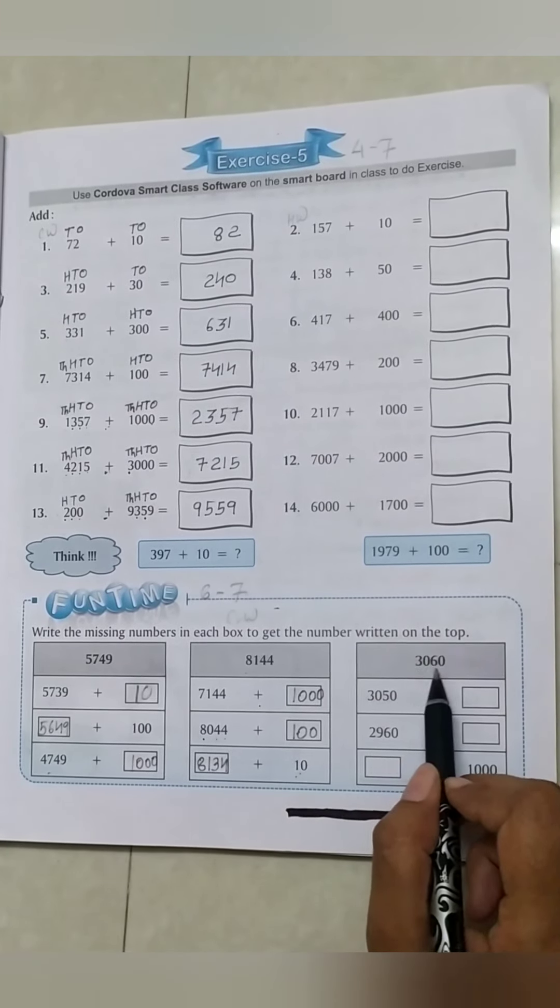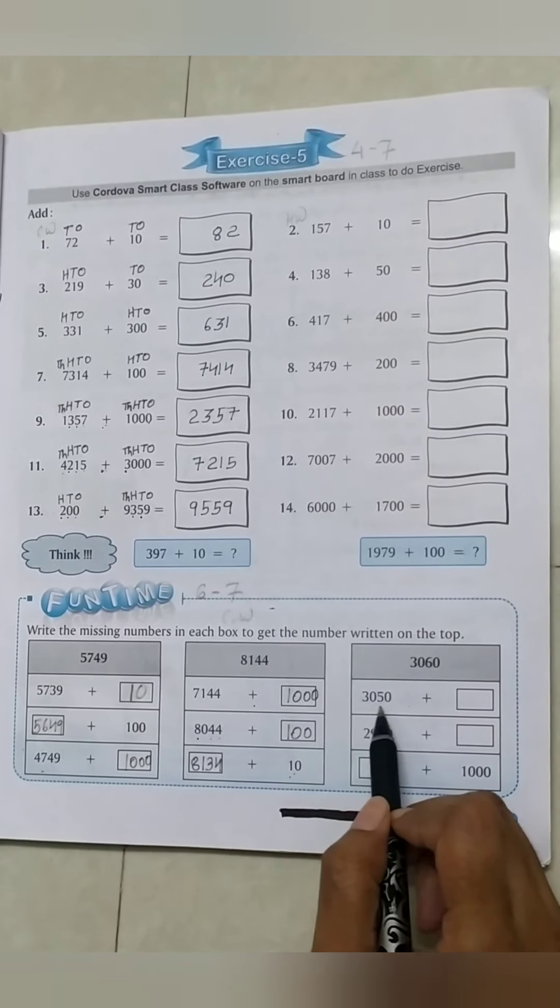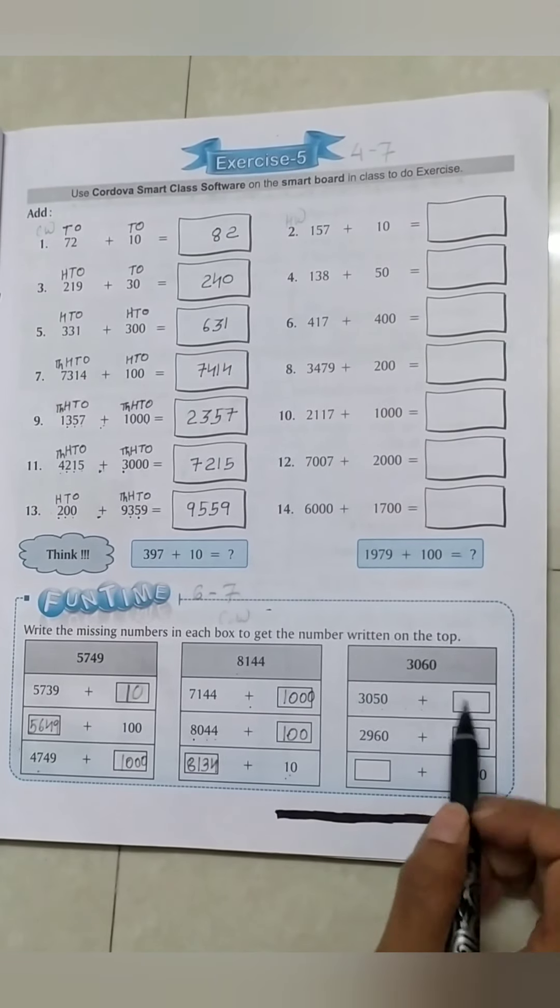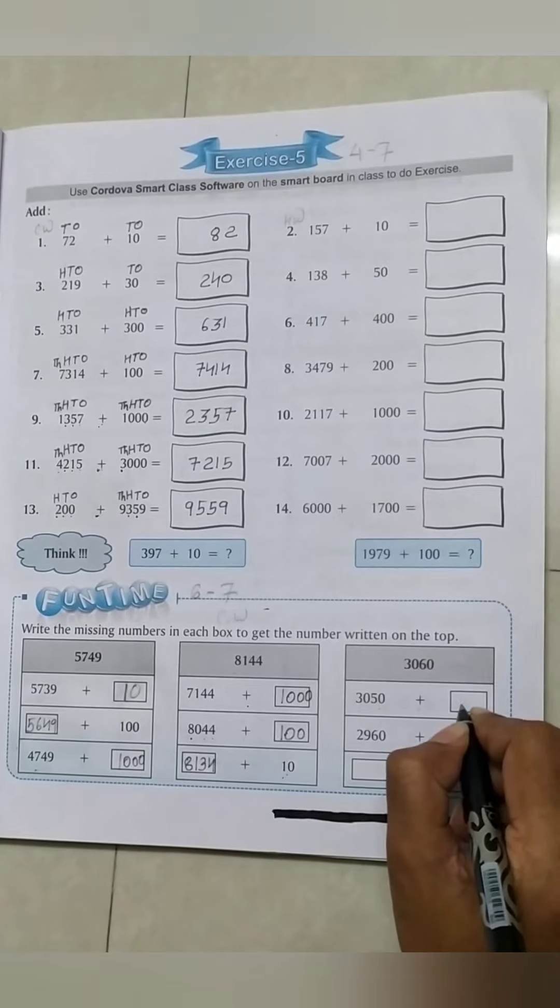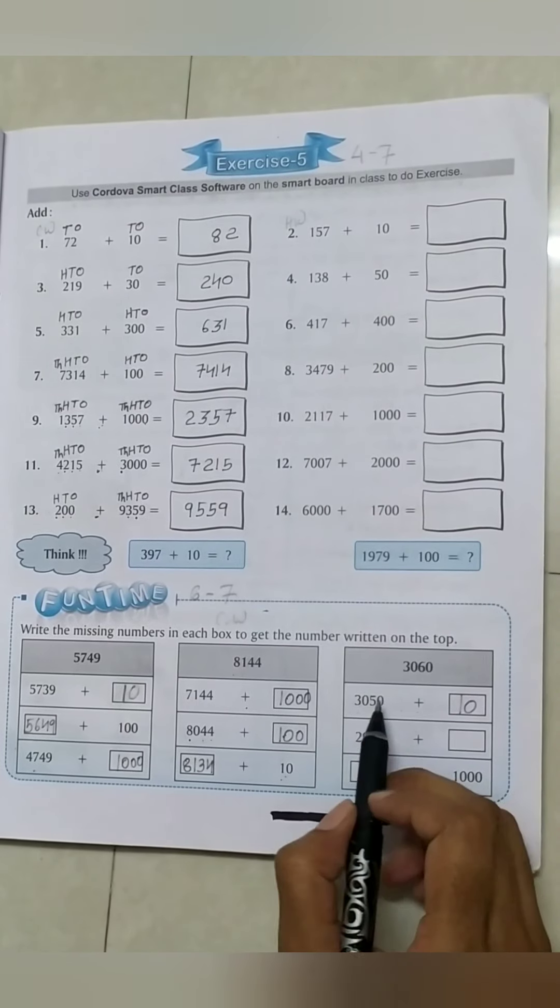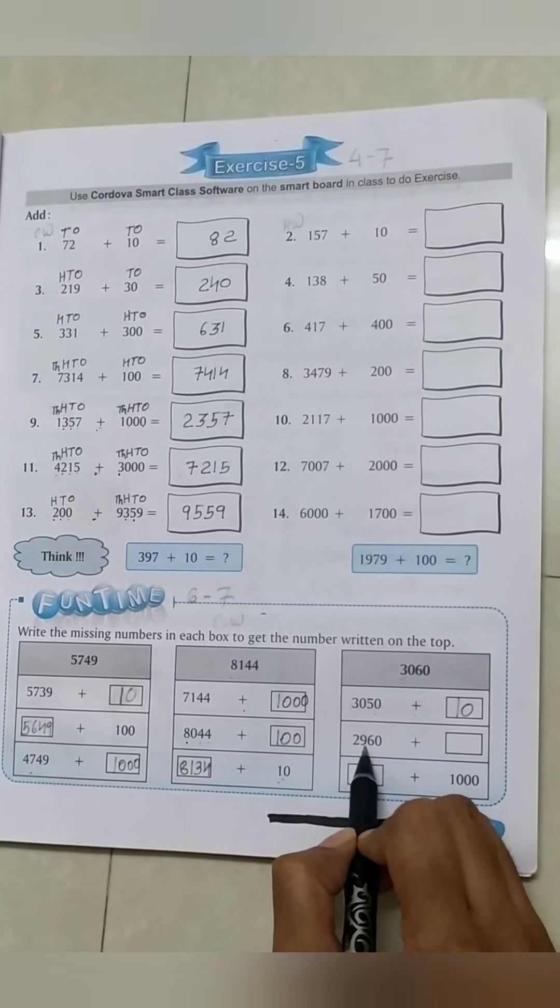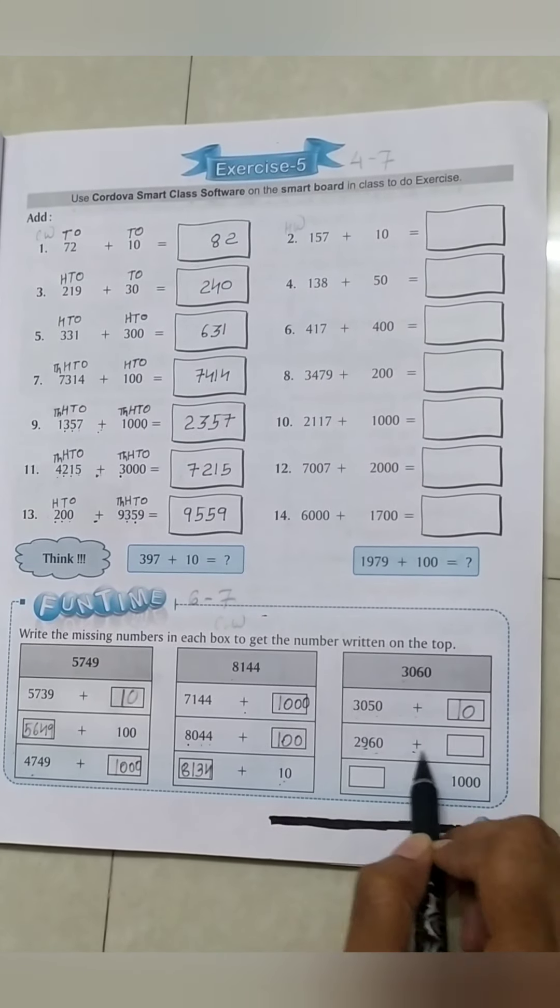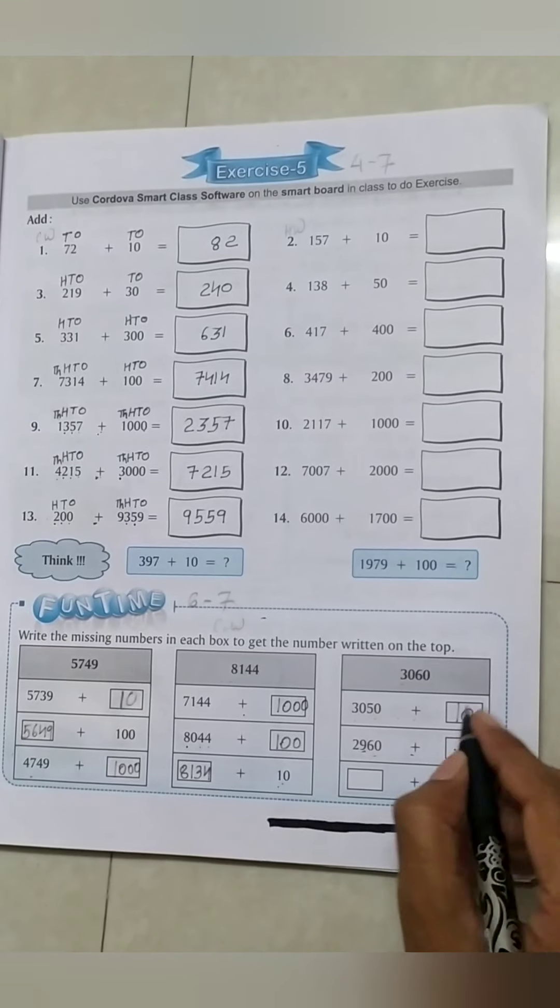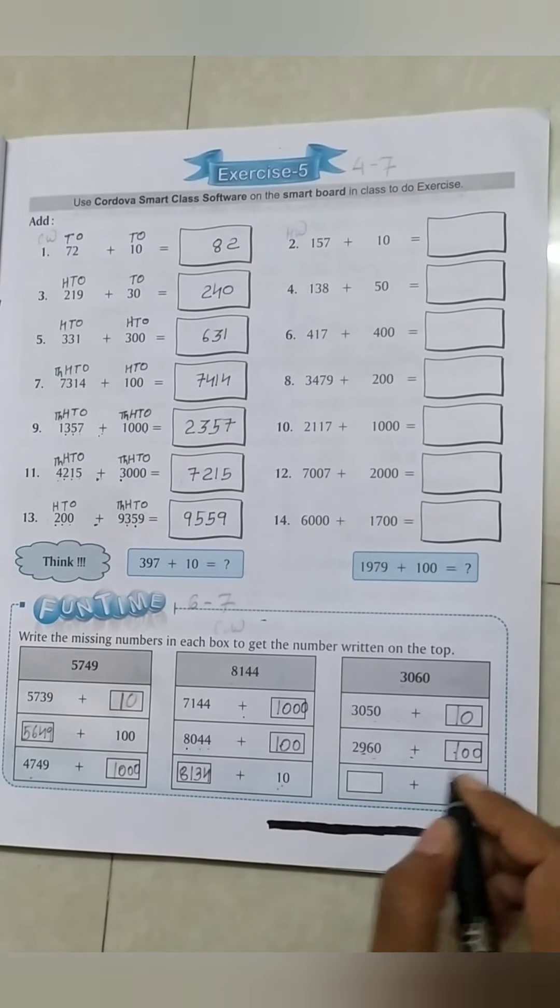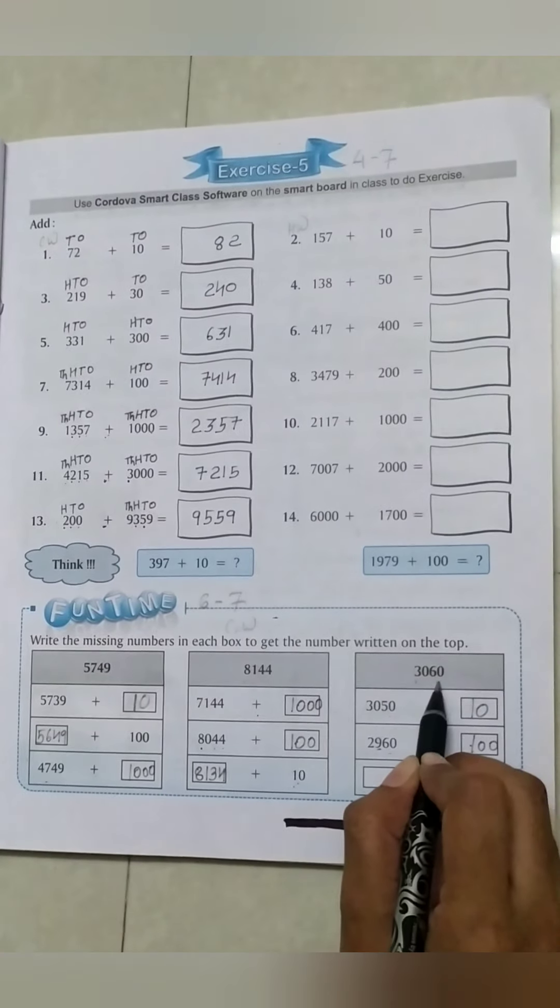Question No. 3: 3060. First blank, 3050 plus 10, so we can get answer 3060. Blank No. 2: 2960 plus blank. The answer is 100, so we can get answer 3060.